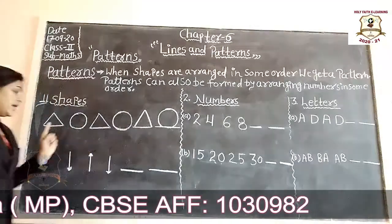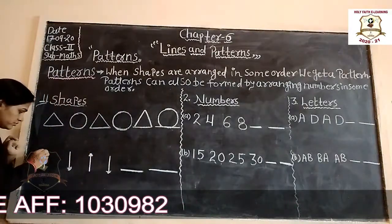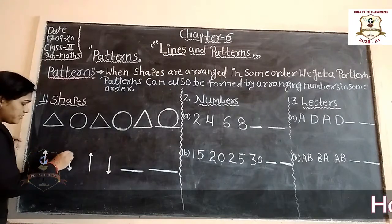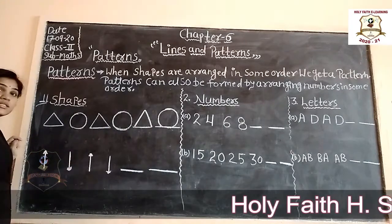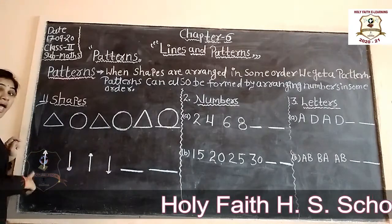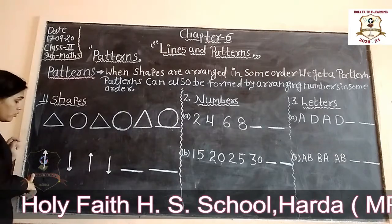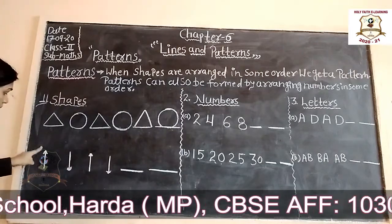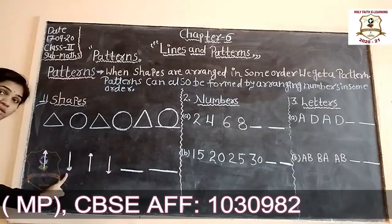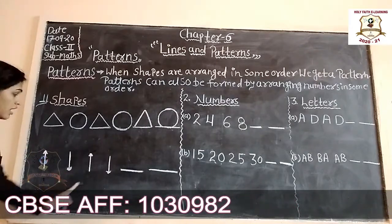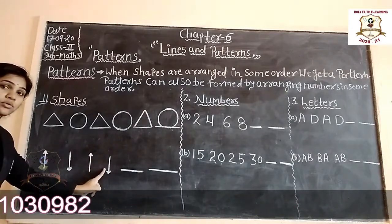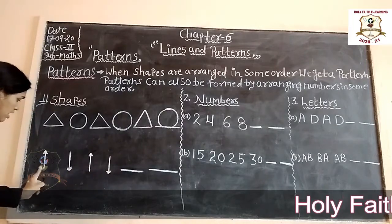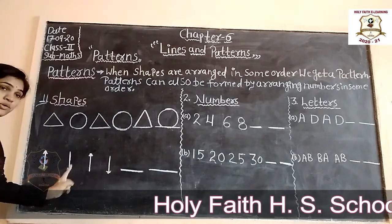Now another example. Which picture is this? Yes, this is an arrow. So students: up arrow, down arrow, up arrow, up arrow, down arrow. So what comes next? Up arrow, down arrow.